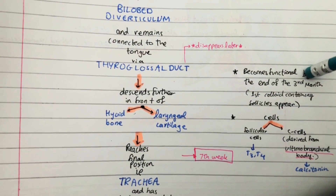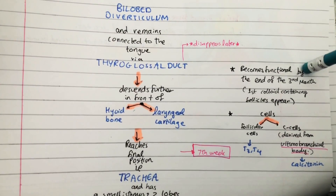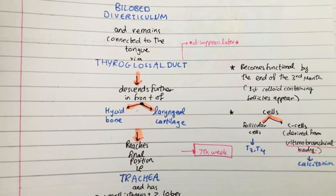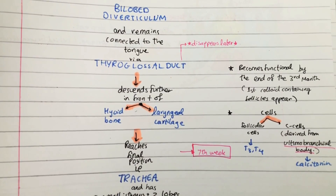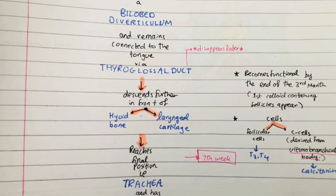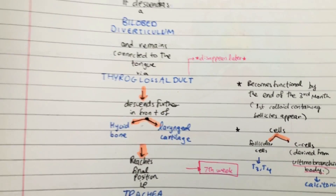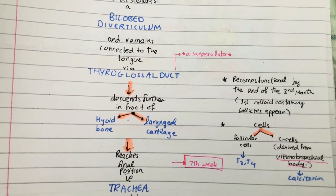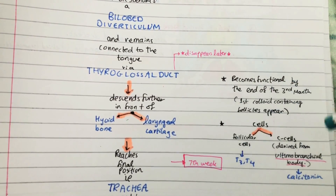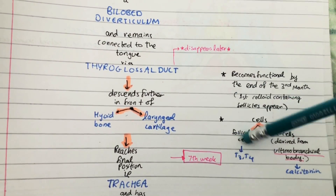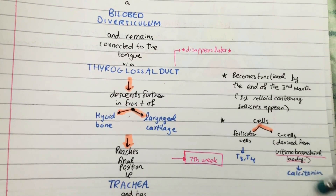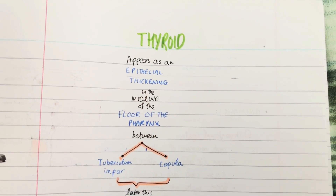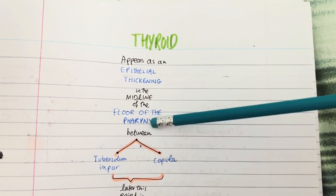The thyroid gland becomes functional by the end of the third month. You know it's functional when colloid-containing follicles appear. The thyroid gland has two major cell types: the follicular cells and the C cells. The follicular cells release T3 and T4, and the C cells release calcitonin.